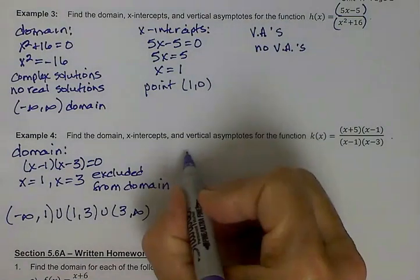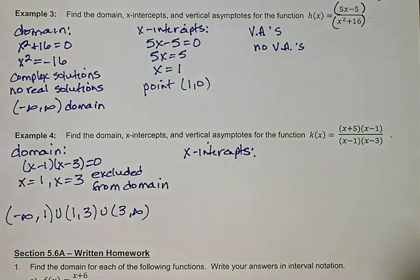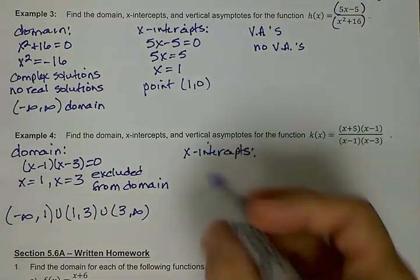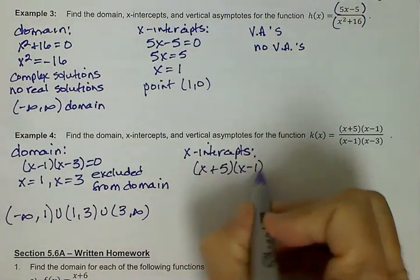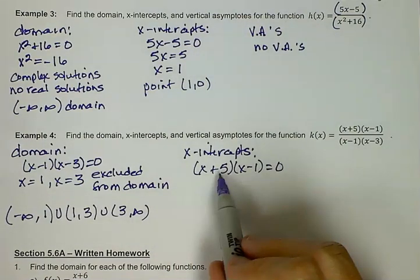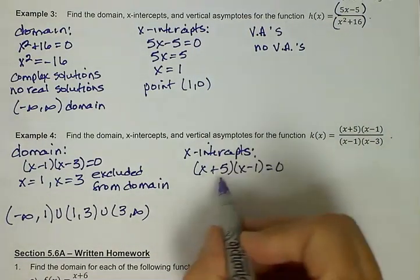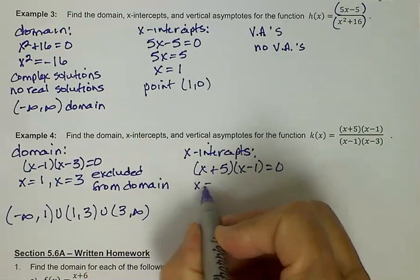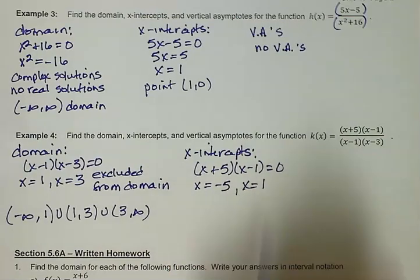And next, let's look at our x-intercepts. For this, we're looking at what makes the numerator equal to 0. Since this one's a little bit more complicated, I'm going to take my whole numerator and just set it equal to 0. That's going to give me two solutions. One at x equals negative 5, and another one at x equals 1.